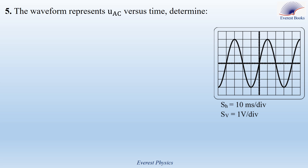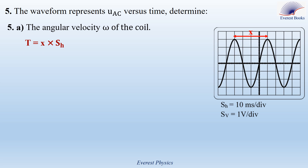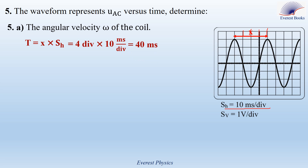Part five: the waveform represents the voltage across the coil Uac versus time. To determine the angular frequency omega, we determine the period of rotation of the coil. The period is given by X times SH, where SH is the horizontal sensitivity or time base, equal to 10 milliseconds per division, and X represents the number of horizontal divisions measured over one cycle. From the figure, X equals four divisions. So the period of rotation is equal to 40 milliseconds. Omega equals 2pi over T, so replacing T by 40 times 10 to the power minus 3 seconds, the angular velocity of rotation of the coil is equal to 50 pi radians per second.